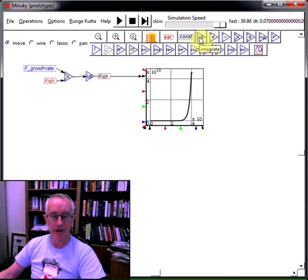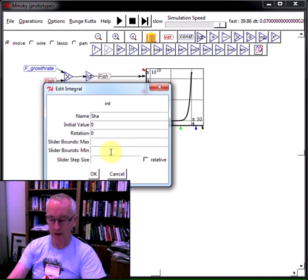Let's bring that down by bringing another integral variable. I can now double-click as well as right-click on it. Let's double-click and call this sharks.